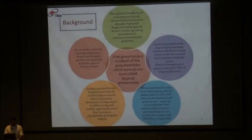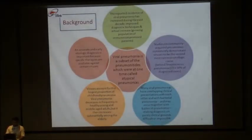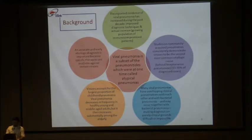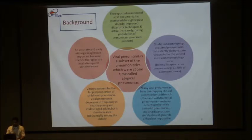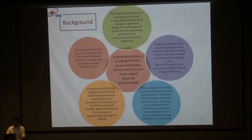Coming to the background, viral pneumonia is a subset of pneumonias which were at one time called atypical pneumonias. Atypical pneumonias were labeled when in the gram stain and aerobic culture no bacterial pathogen was grown and the pneumonia was not responding to antibiotics. The reported incidence of viral pneumonia has increased during the past decades due to improved diagnostic techniques and actual increase because of a growing population of immunocompromised patients.